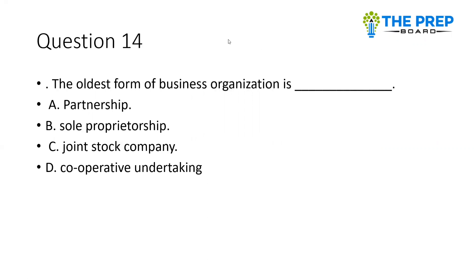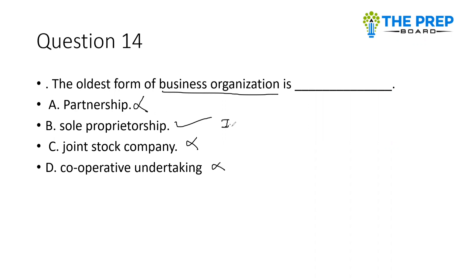The oldest form of business organization is what? Options are: partnership, sole proprietorship, joint stock company, or cooperative undertaking. You can note the correct answer for the oldest form of business organization.